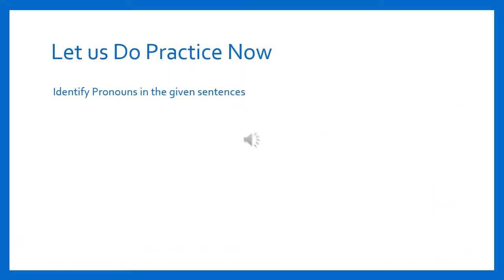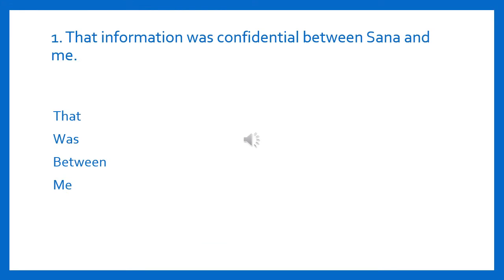Practice makes the man perfect, so let us do some practice. The sentence is: 'That information was confidential between Sana and me.' Let's find the pronoun among four options: that, was, between, or me. The correct answer is 'me.' Me is a pronoun in these four options.